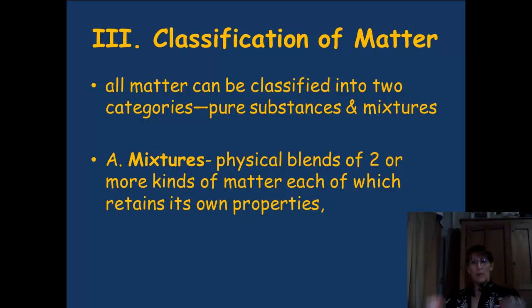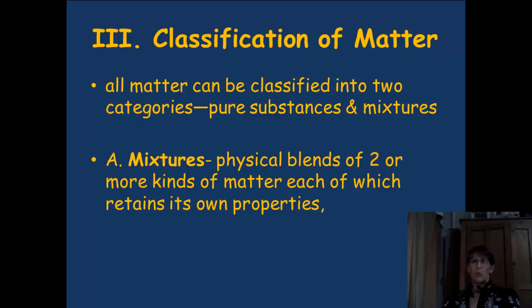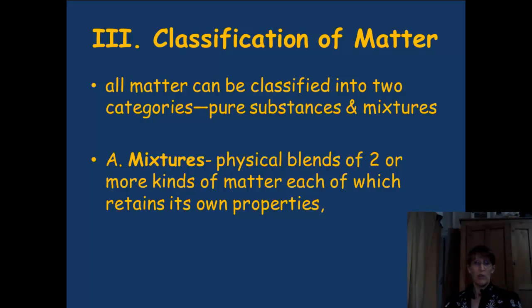If it's a mixture, it's been physically put together. You take two things and you just put them together, stir them up. There are different ways to mix them together, but basically you just did something physical to them. Some things are mixed up really well, some things are not. But it's a physical blend of two or more kinds of matter, each of which retains its own property. It's like taking salt and sugar and mixing them together — it's hard to tell apart by eyeball, but you can taste the individual grains of each.